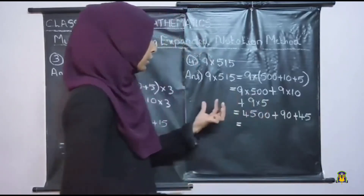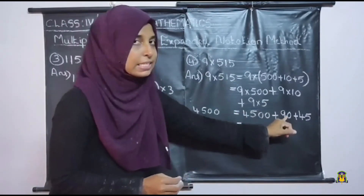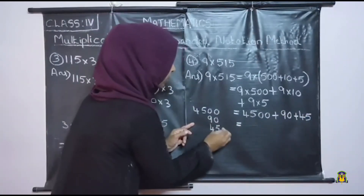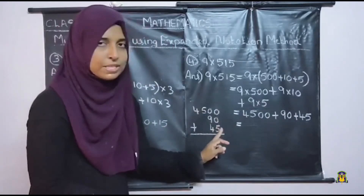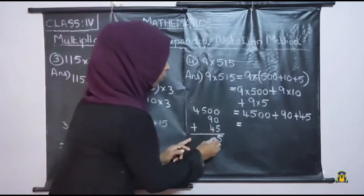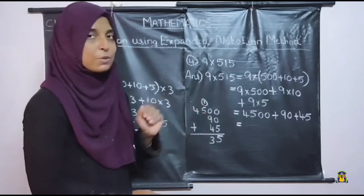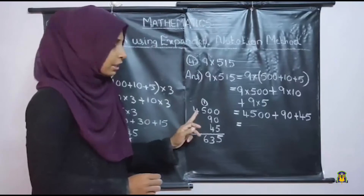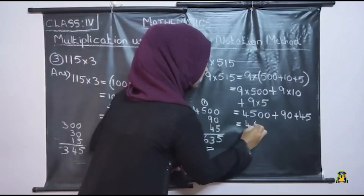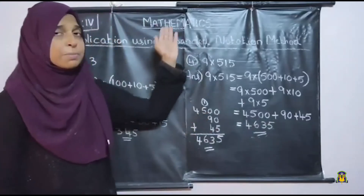Now we can add these three numbers: 4,500 plus 90 plus 45. 0 plus 0 plus 5 is 5. Then 0 plus 9 plus 4 — what is 9 plus 4? It is 13 — so write 3 and 1 as carry over. Here there is 5 plus 1, which is 6. Then 4 — there is no other number here. So the product is 4,635 using the expanded notation method.